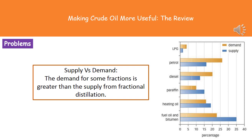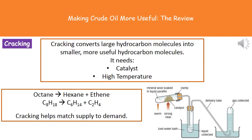They do like to ask you about this with a six-mark question, giving you information about supply and demand and asking about the problems. You should talk about the fact that some fractions are not being produced in high enough quantities to meet the demands, and then go on to talk about the solutions. One thing we can do to meet that actual demand is carry out a process called cracking.